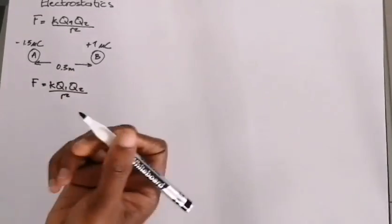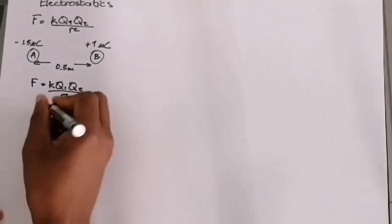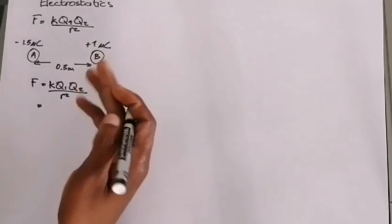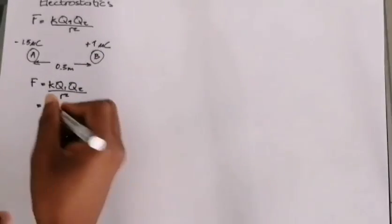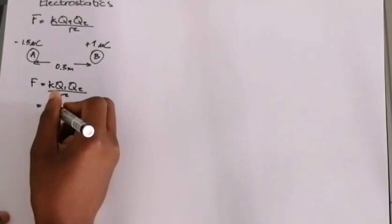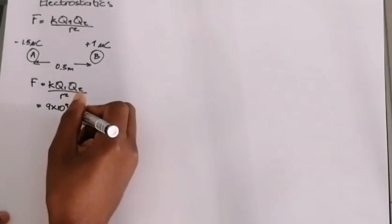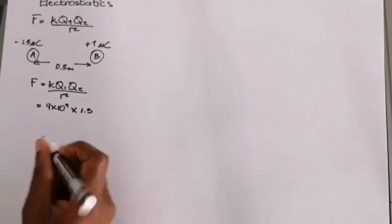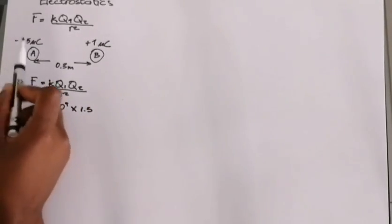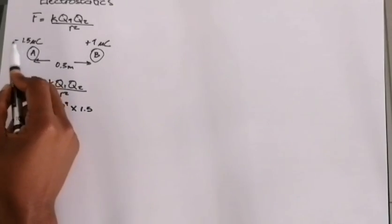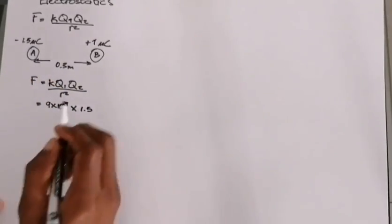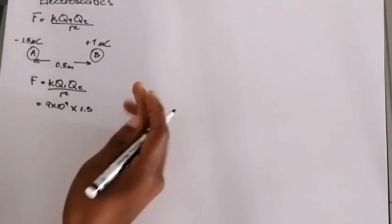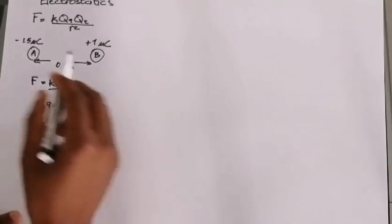We take F = k·QA·QB / r². Coulomb's constant k is given in your data sheet — it's 9 × 10⁹. We multiply by the charge values. I advise that you do not use the sign on the charge here; substitute the magnitude of the charge, not the sign.